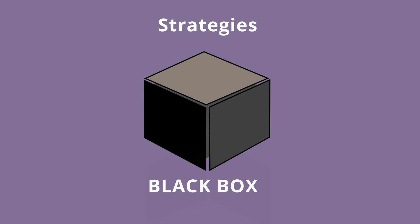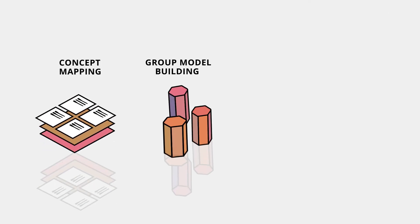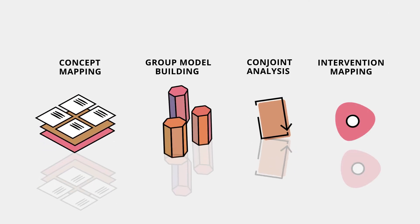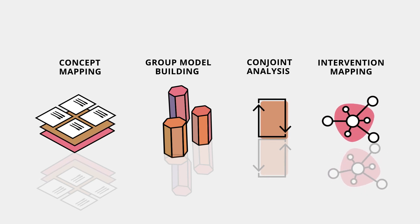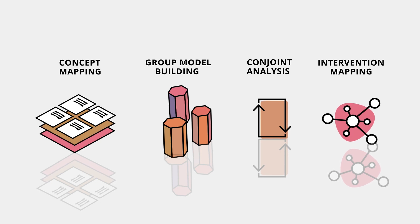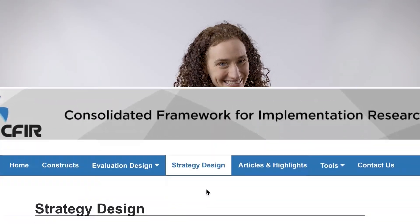But we think there are better approaches. Here are some examples: concept mapping, group model building, joint analysis, and intervention mapping. The problem with these is they all require special methodological skills and some theoretical understanding. They're certainly not easy, but that's why you're here — to figure out how to make implementation science easy.